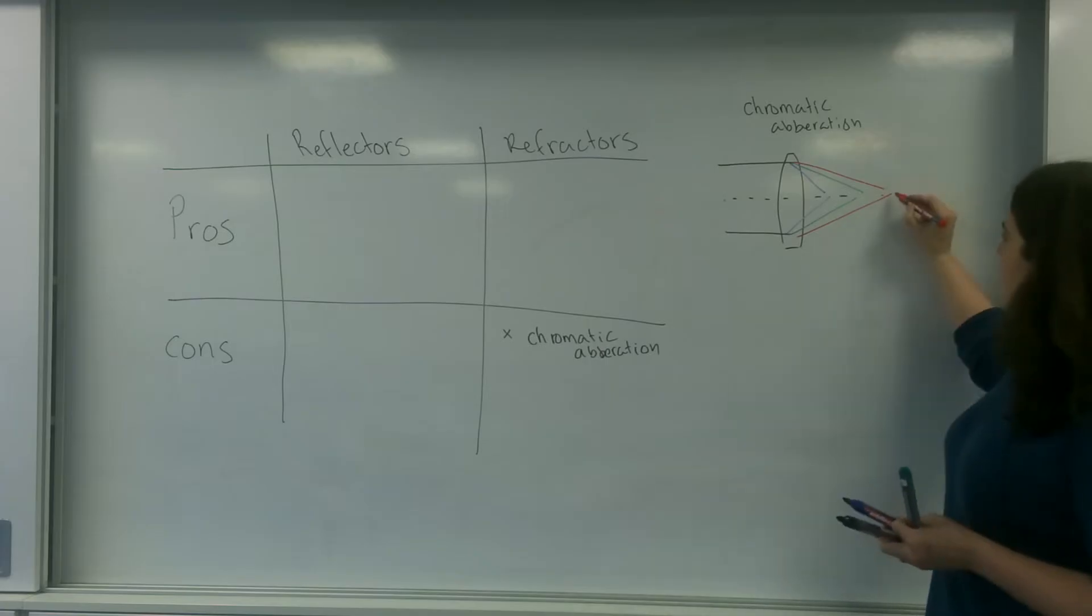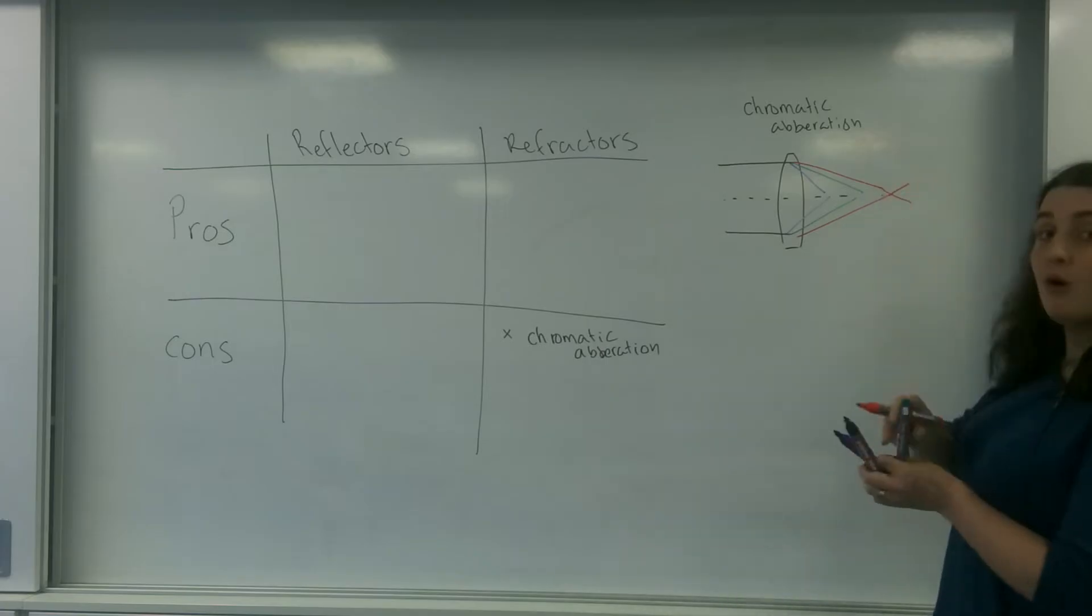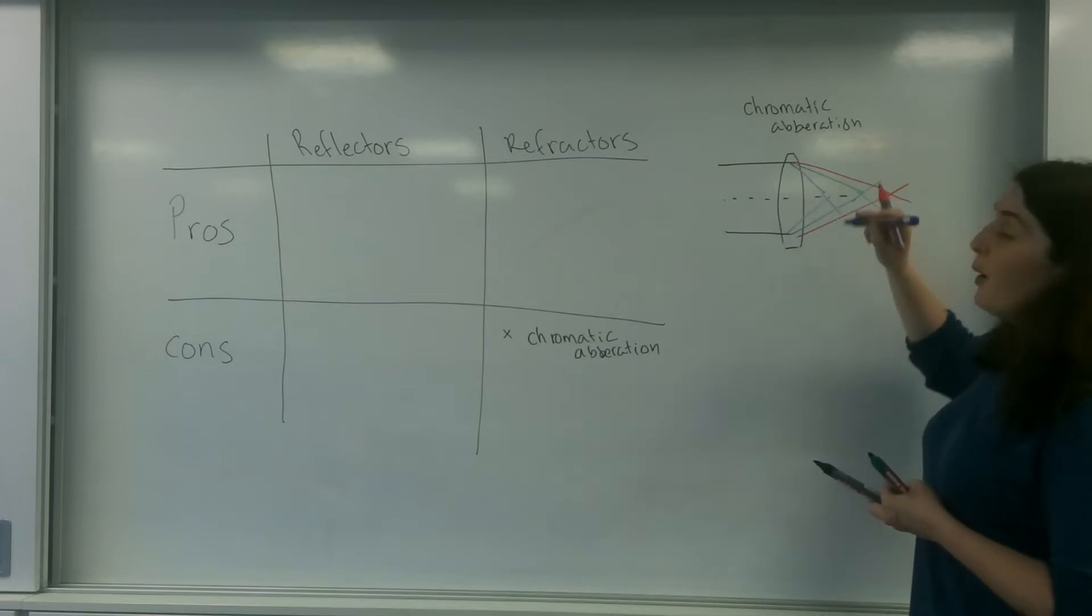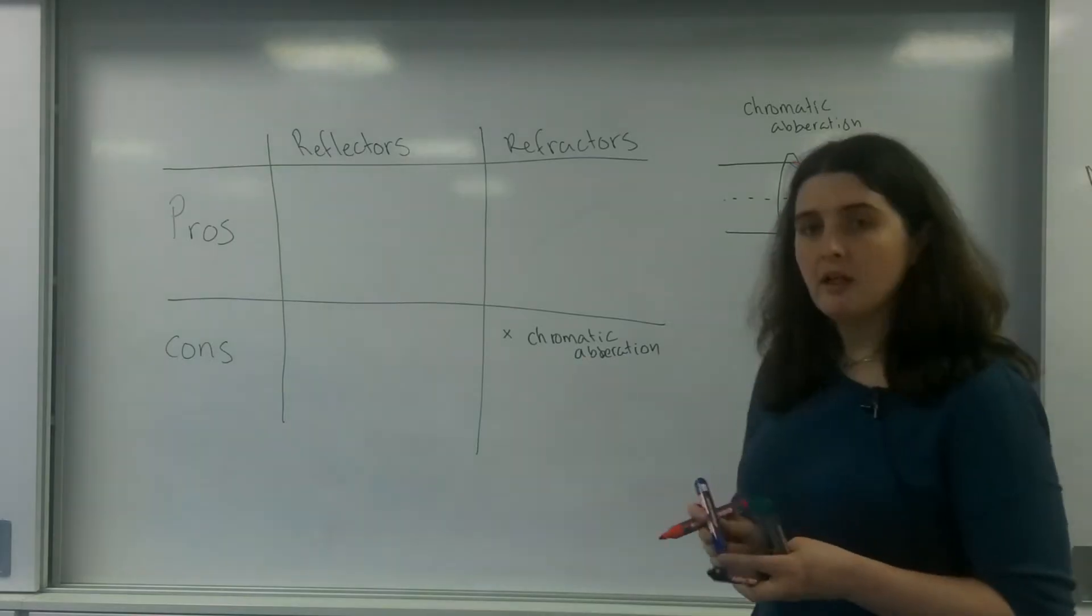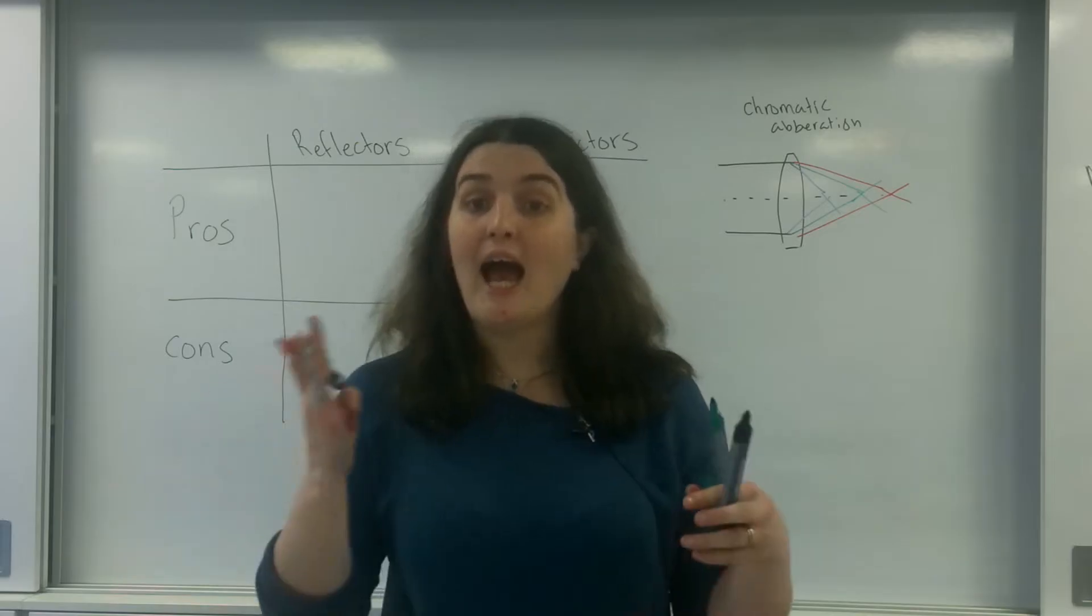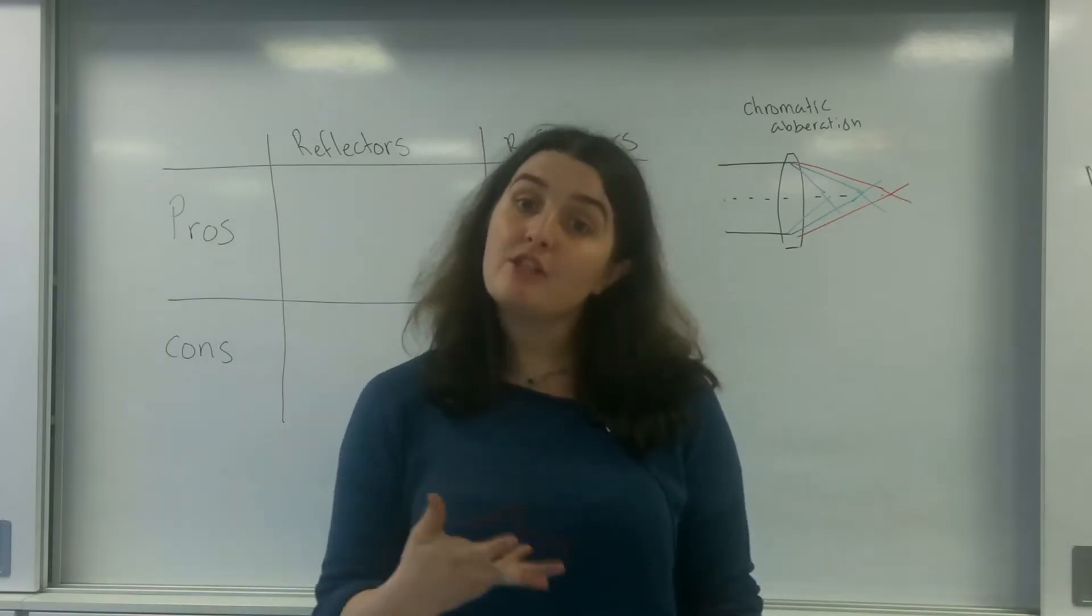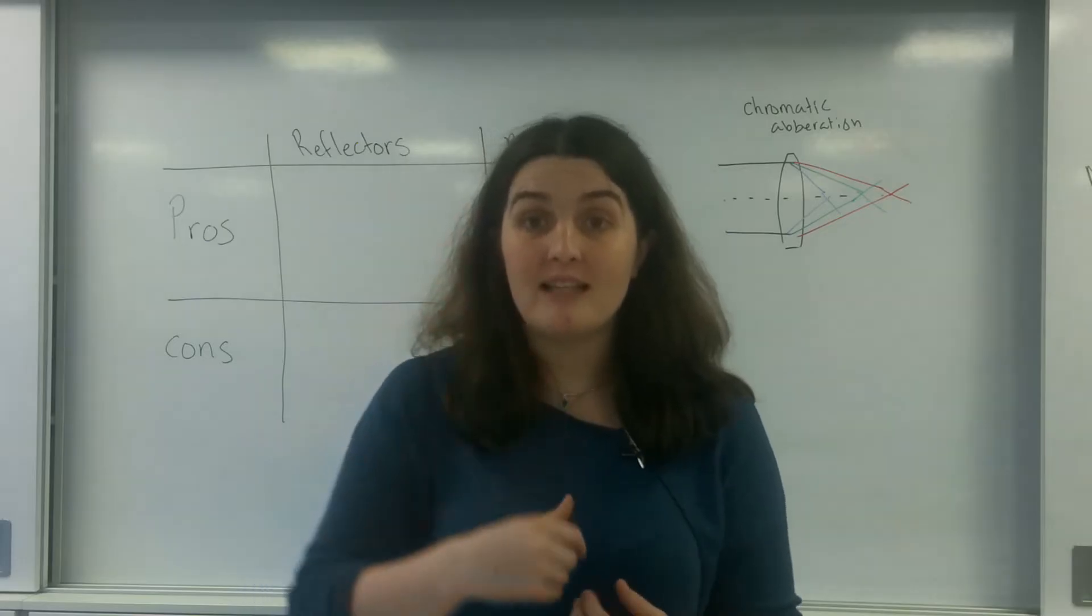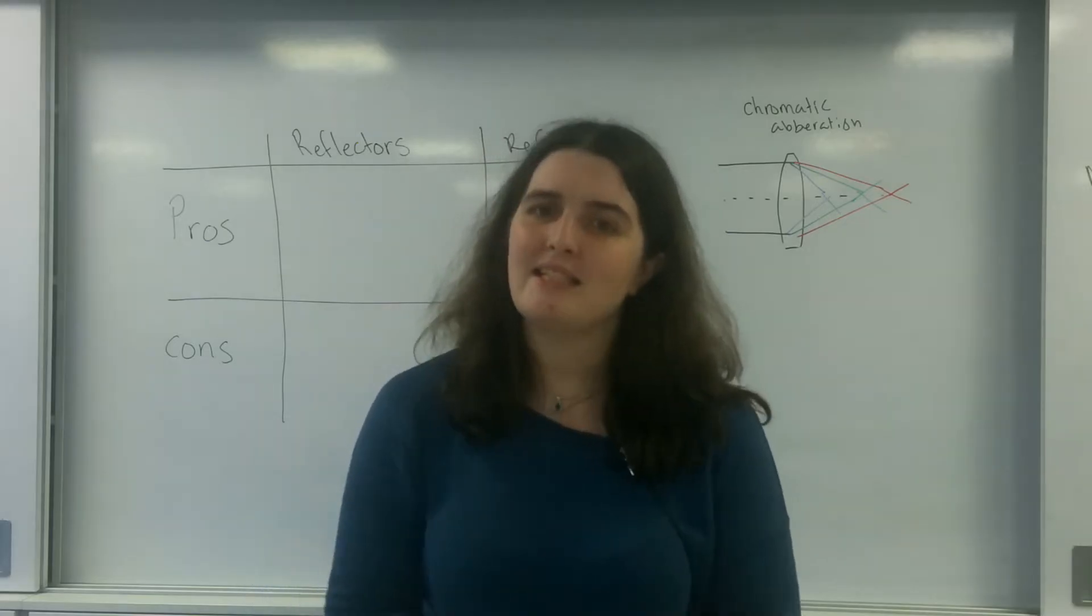This means that your image, your colors of your image, are not meeting at the same point. This means you get a blur, a distortion with the color, which is why it's called chromatic aberration. And this only happens because there are lenses. The fact that there's two lenses increases this even more.